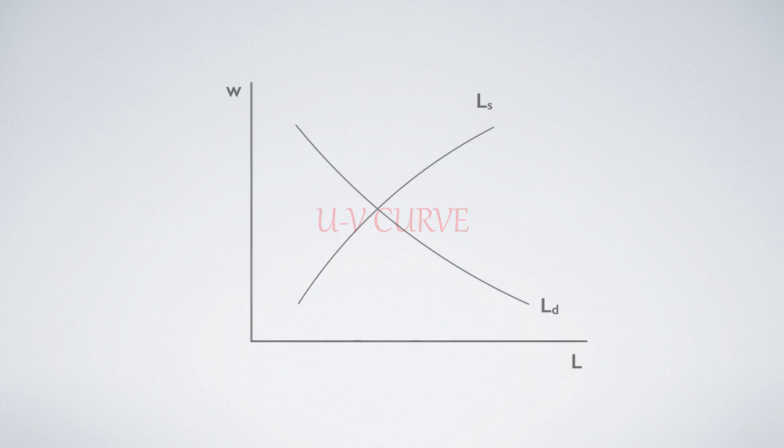This video derives the UV curve, also known as the Beveridge curve. Here LD is the labor demand curve, while LS is the supply curve.